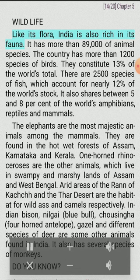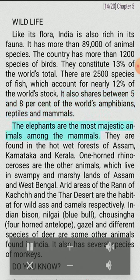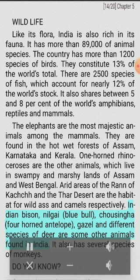Wildlife: Like its flora, India is also rich in its fauna. It has more than 89,000 animal species. The country has more than 1,200 species of birds, constituting 13% of the world's total. There are 2,500 species of fish, which account for nearly 12% of the world's stock. India also shares between 5 and 8% of the world's amphibians, reptiles and mammals. The elephants are the most majestic animals among the mammals, found in the hot wet forests of Assam, Karnataka and Kerala. One-horned rhinoceroses live in swampy and marshy lands of Assam and West Bengal. Arid areas of the Rann of Kutch and the Thar Desert are the habitat for wild ass and camels respectively.